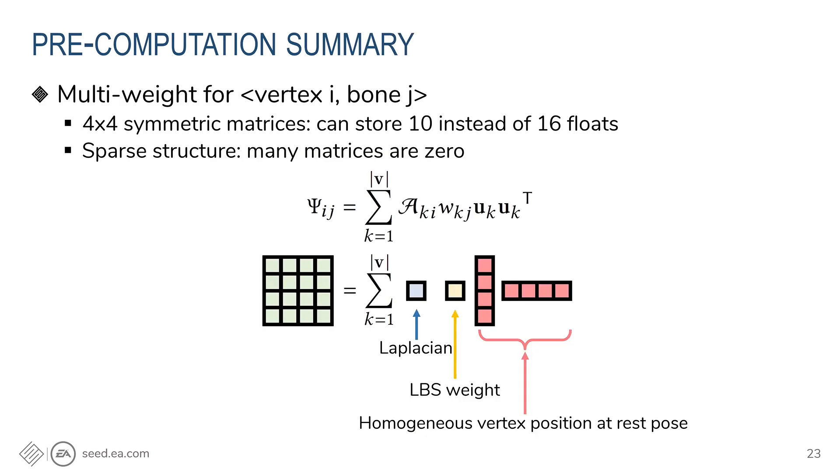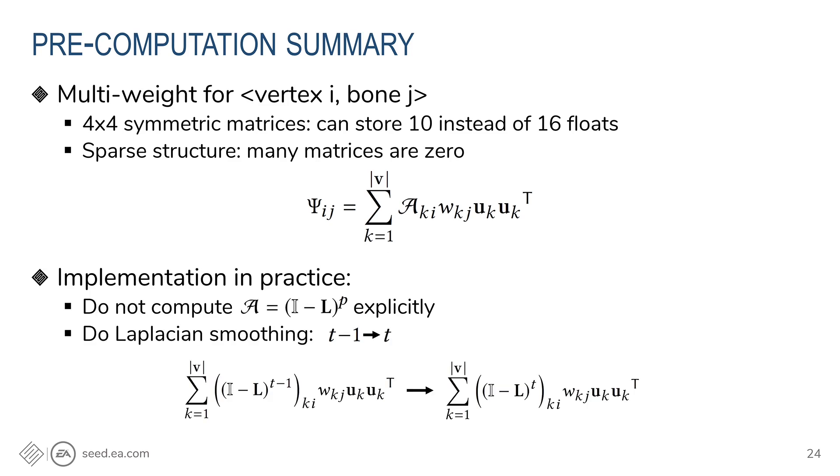So semantically, we found out that the terms we precompute are very similar to multi-weights. At the bottom here is the visualization of how they are formed. The Laplacian weight A_ki, and the LBS weight W_kj are scalars. So the final matrix psi are weighted sum of all outer products u times u transpose. And these outer products are symmetric matrices. And therefore, psi are also symmetric, and we can save some storage. We also note that sparseness structures of the multi-weights are also very similar to the regular scalar skinning weights. That means there will be many zero-multi-weight matrices.